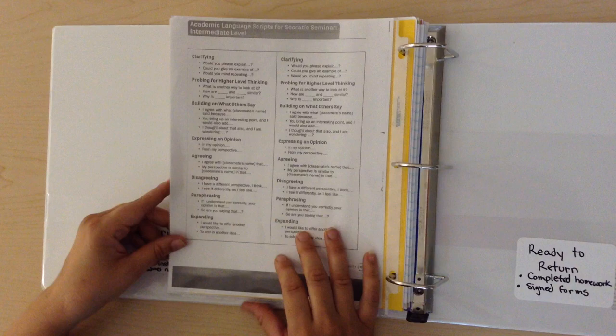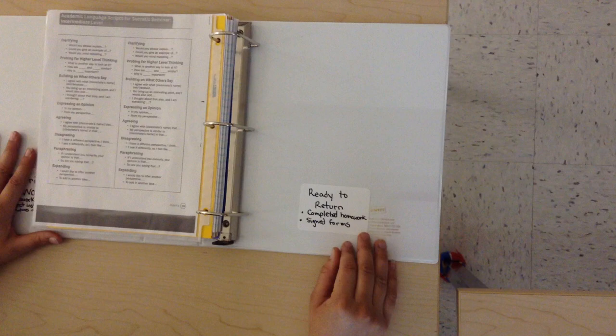On the back side of your binder, you will have a pocket for work that is ready to return. This is completed homework or forms that have been signed by adults.